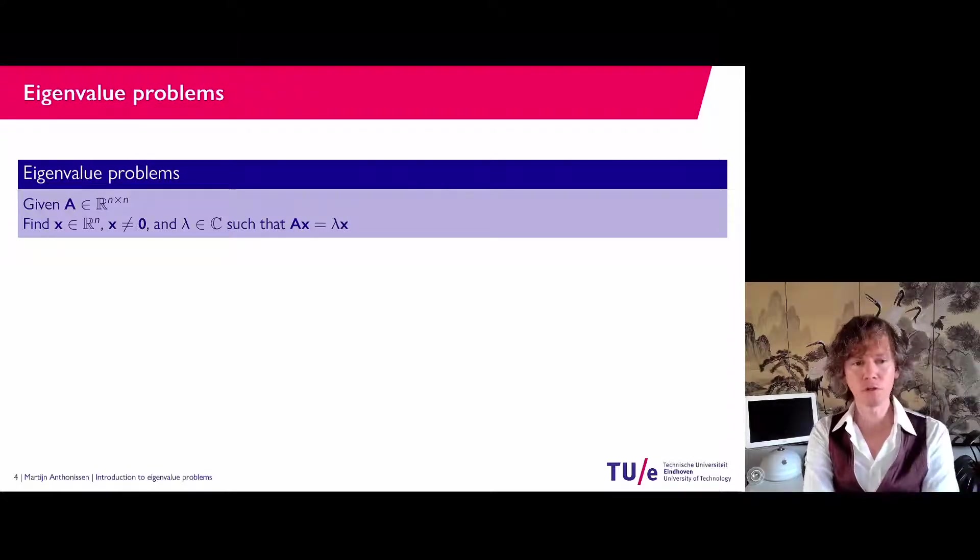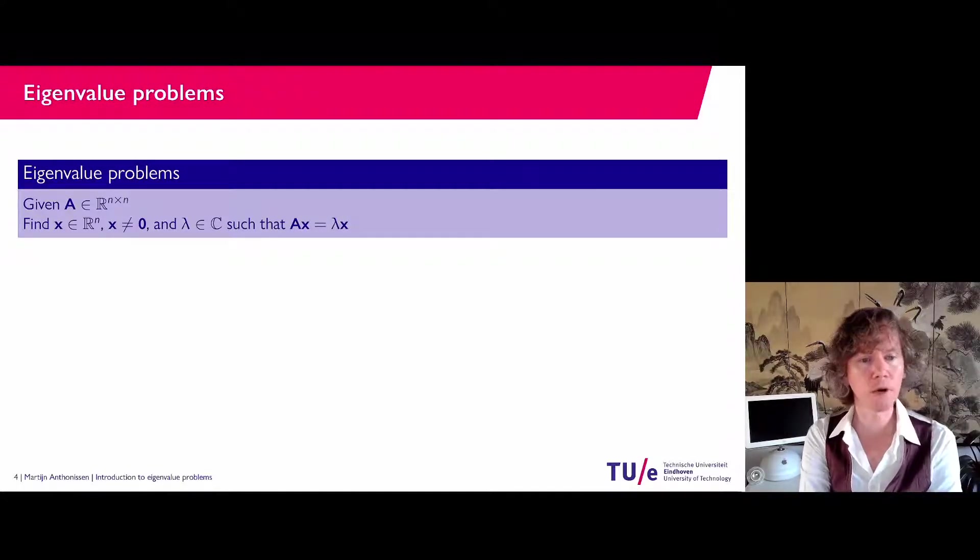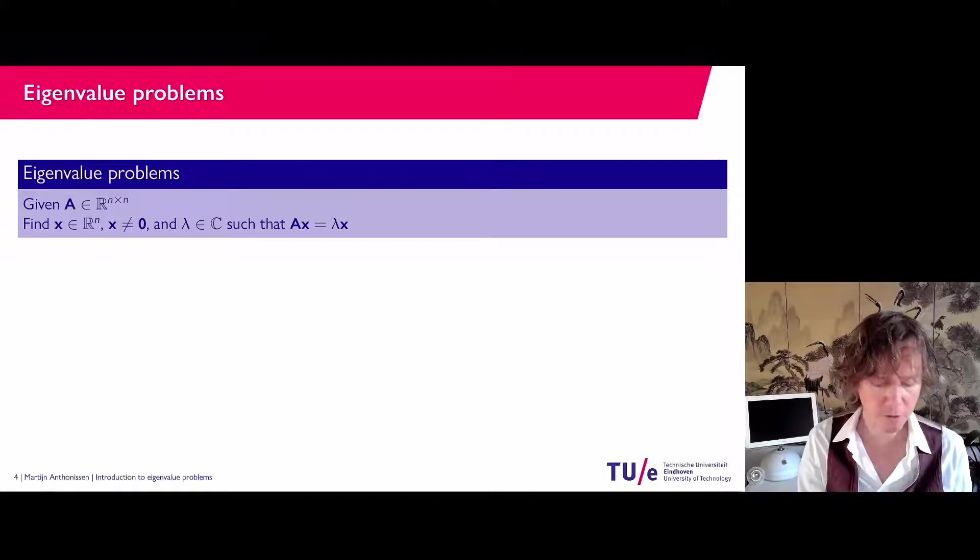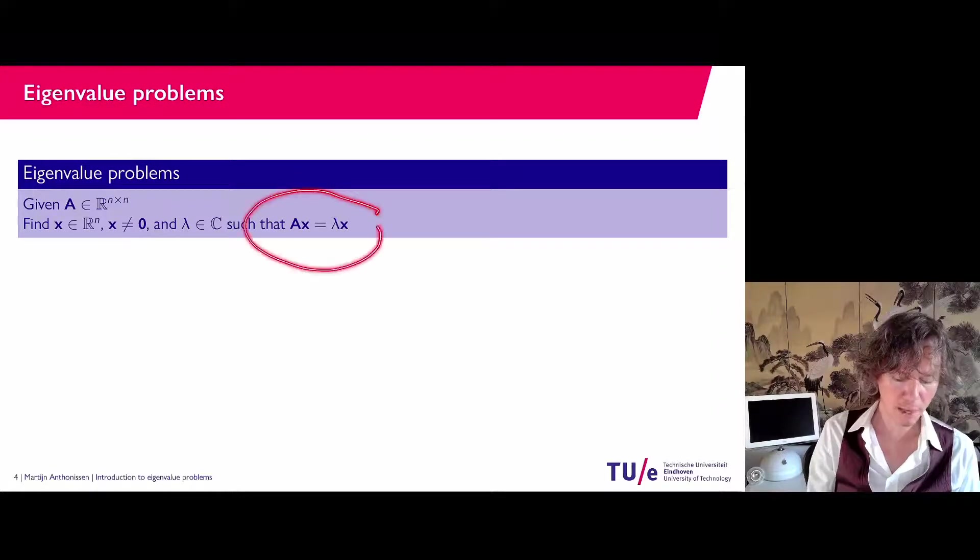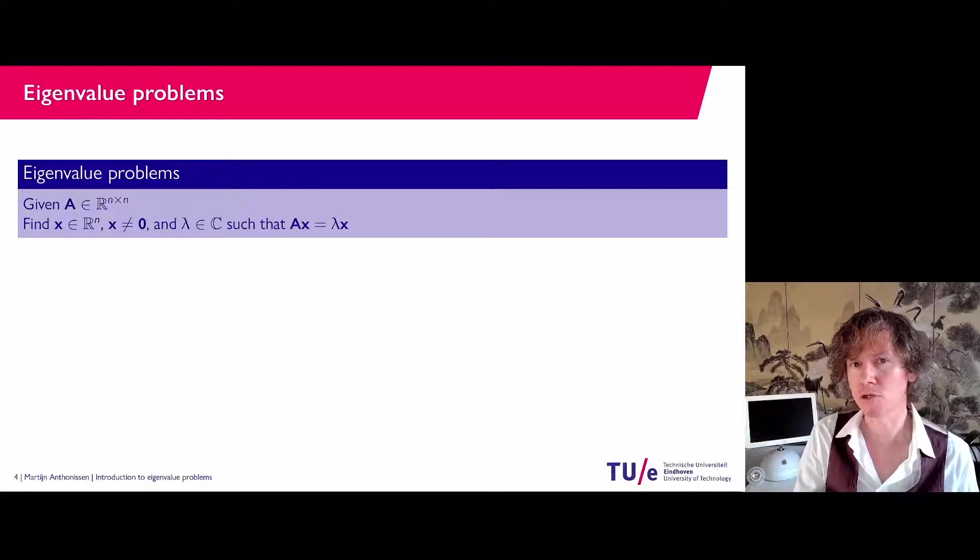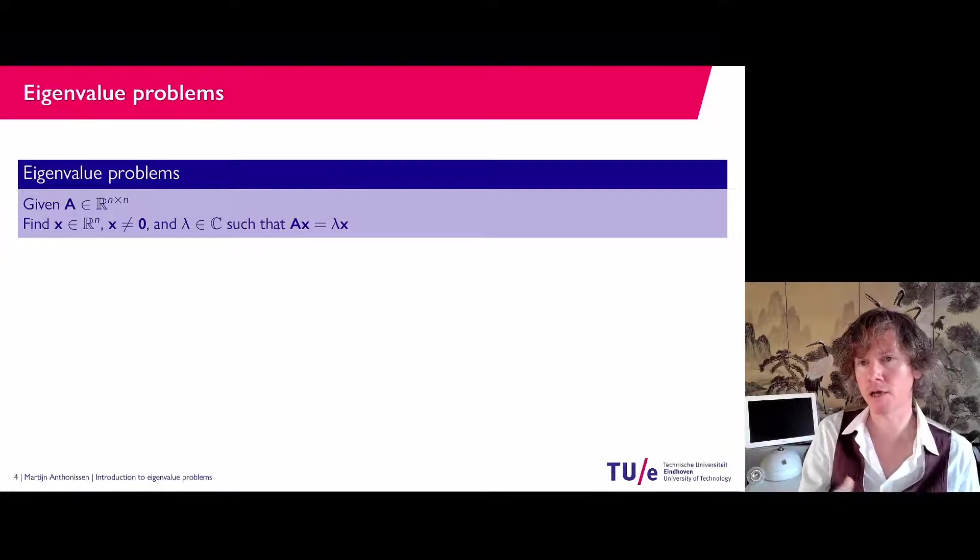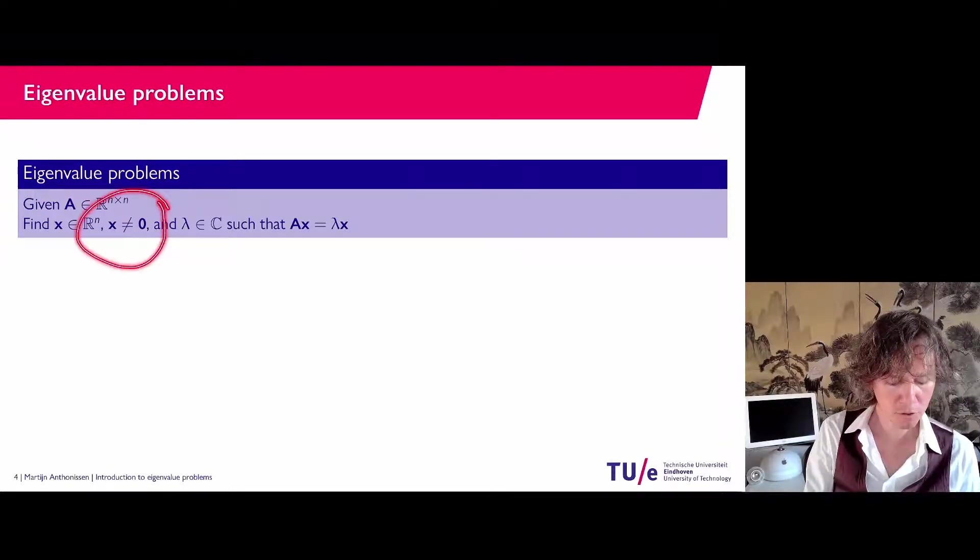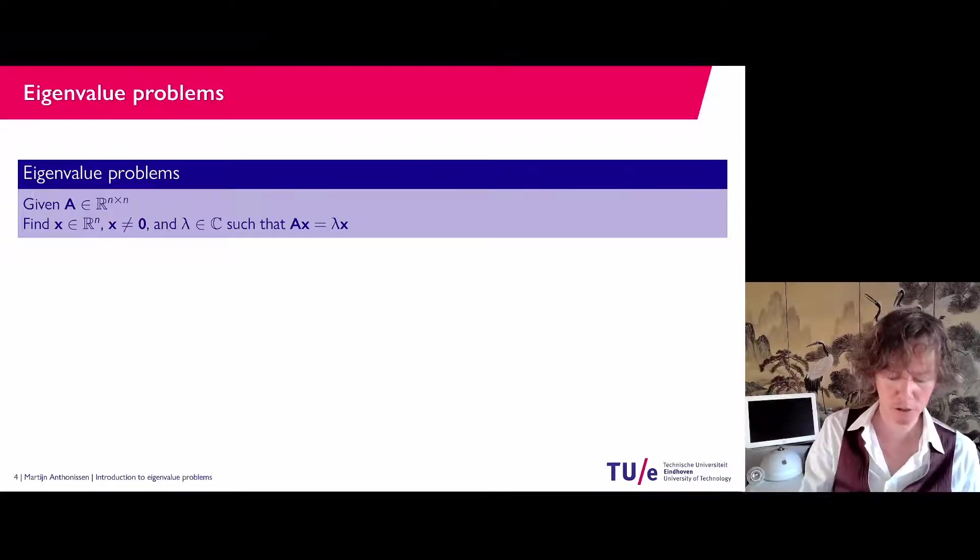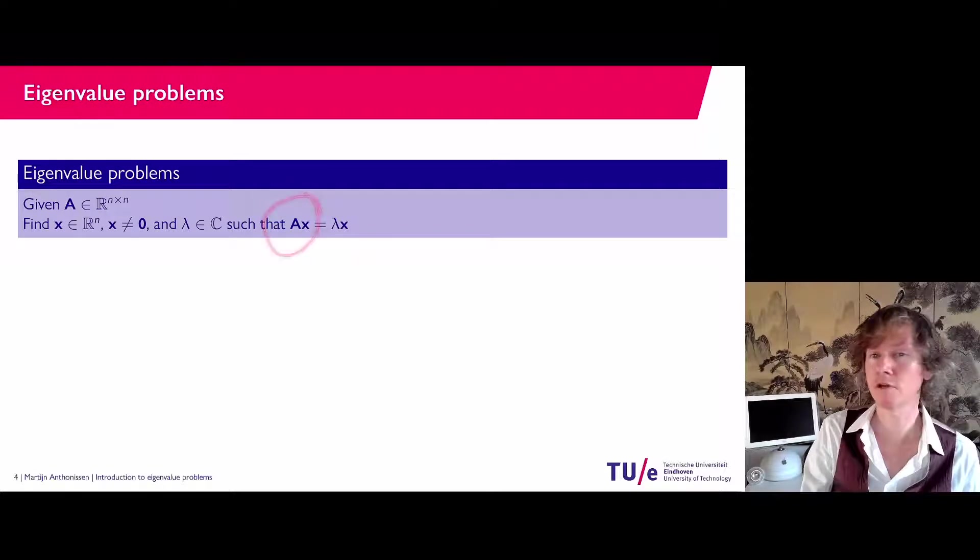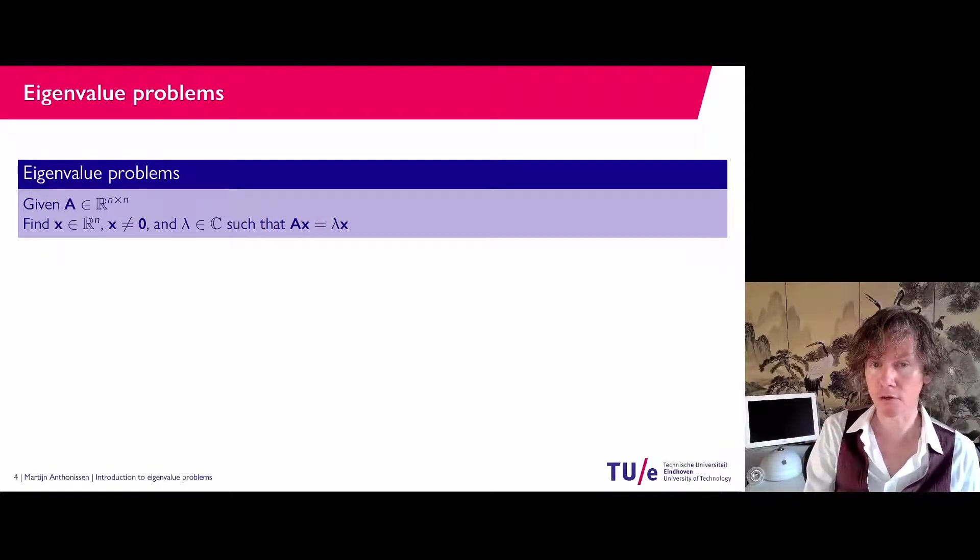So eigenvalue problems, of course, you've seen those before. Given is a square matrix A and we are trying to find vectors x such that A times x equals λ times x. Now, x cannot be the zero vector because then it would say A times zero equals zero. That is not interesting. So x needs to be unequal to zero. However, if we can find a non-zero vector x such that Ax equals the zero vector, then that is very interesting. So λ equals zero is allowed. The eigenvector cannot be the zero vector. Eigenvalues can be zero.